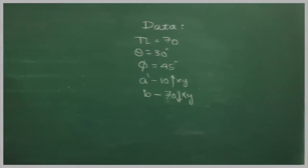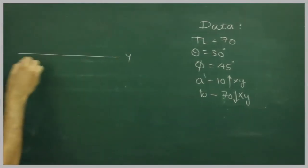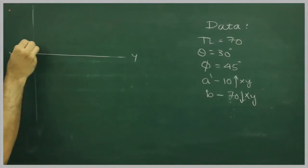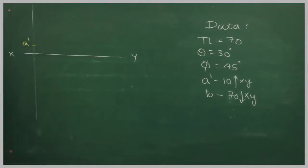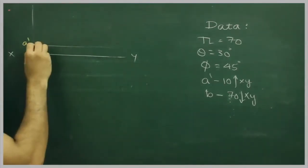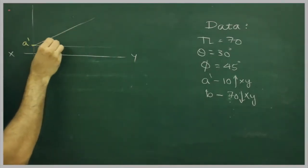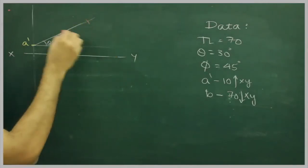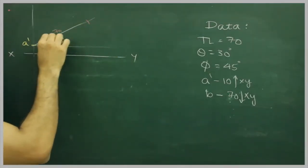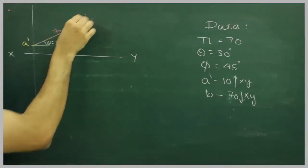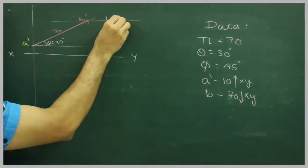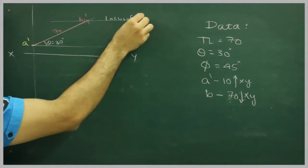First we will draw the XY line and we will mark a dash. Now we have angle theta, that is 30 degrees, and we have true length which is 70. Mark b dash, so we got the locus of b dash.